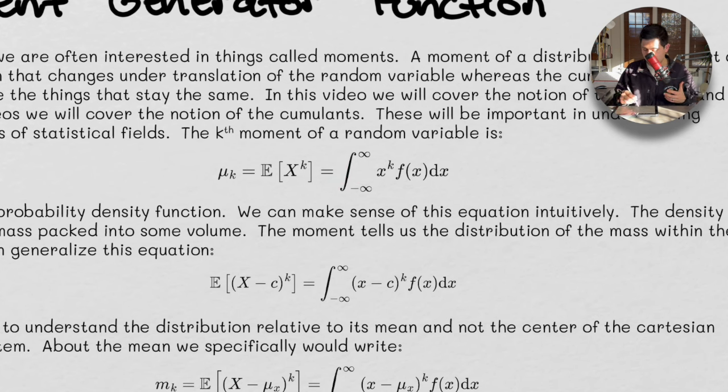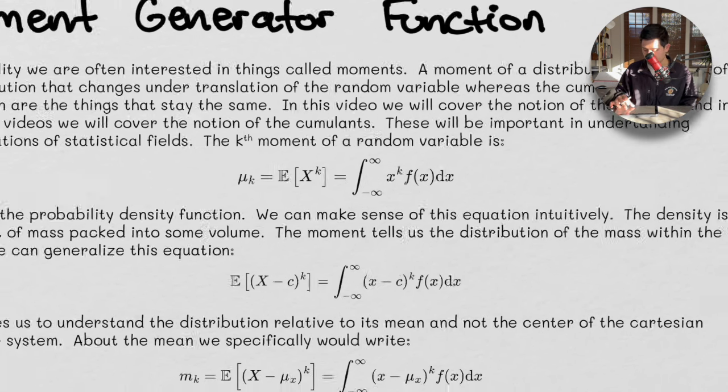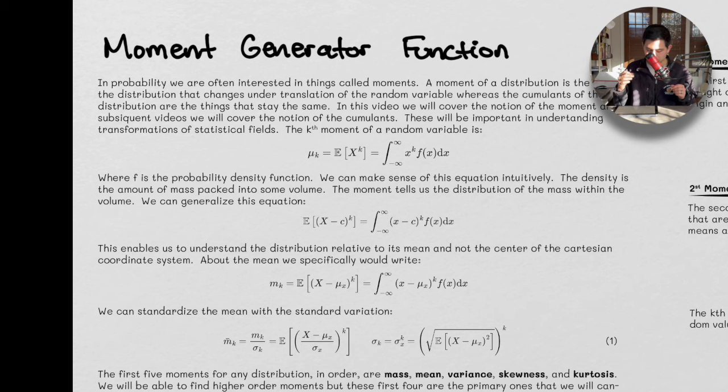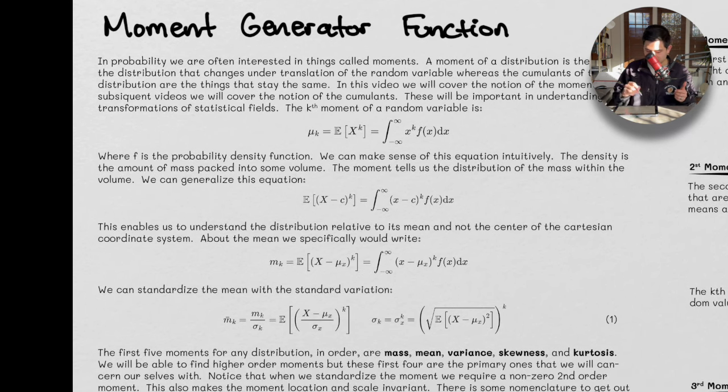So, if k was one, this thing would be an average. This would be the mean of our probability distribution. So, f, again, is the probability density function. Density distribution. Density is the distribution of mass. A lot of these terms are going to be interchangeable. We can make sense of this equation intuitively. The density is the amount of mass packed into some volume. The moment tells us the distribution of mass within that volume.